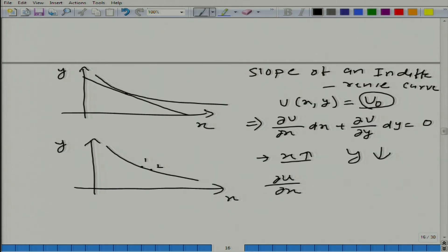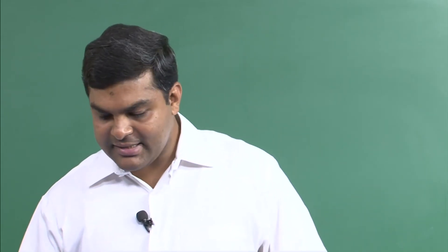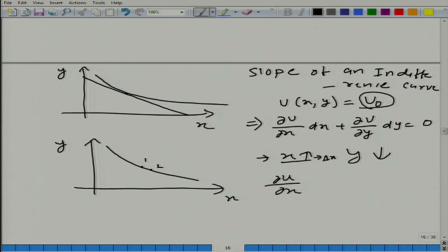So, ∂u/∂x is rate of change in u with respect to x, and of course we are keeping y constant. So, x is going up by Δx, so total change in utility will be ∂u/∂x, that is the rate of change in u with respect to x, multiplied by Δx.